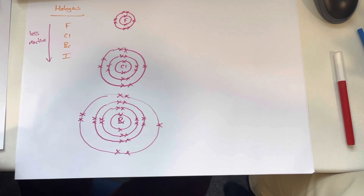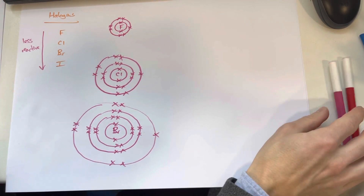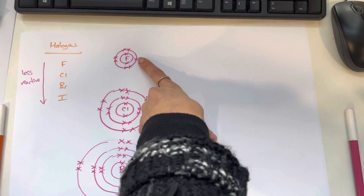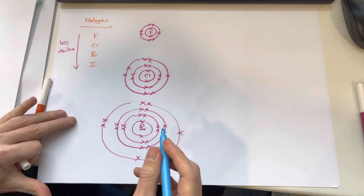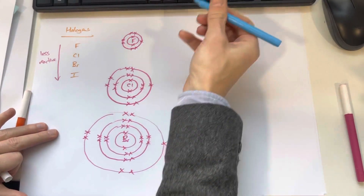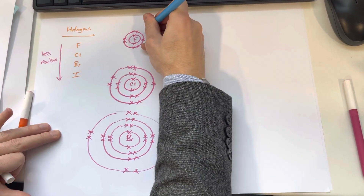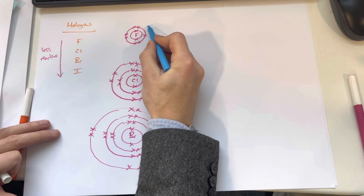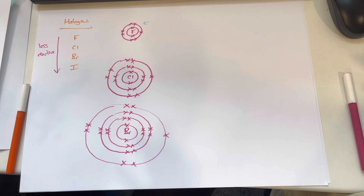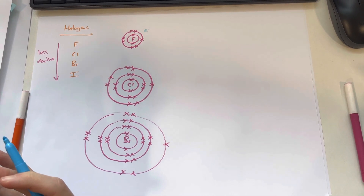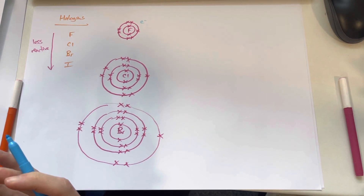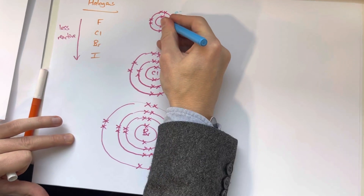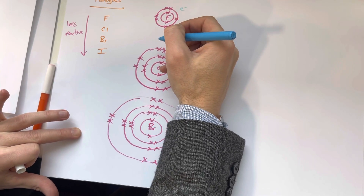So now you can see what happens as you go down. What do halogens need to do in order to react? They need to gain an electron, because they have seven electrons and they need eight. In fluorine, the incoming electron can get quite close to the nucleus because the nucleus is positive — it's full of protons — and the positive attracts the negative. So in fluorine there's a very short distance between the nucleus and the incoming electron.